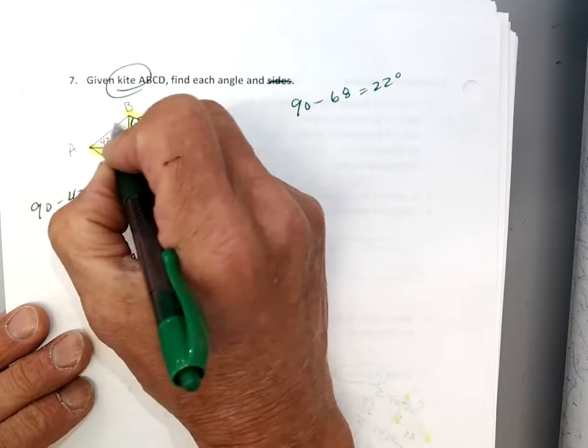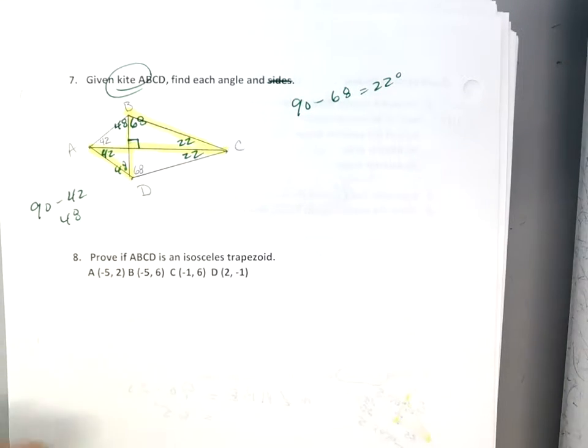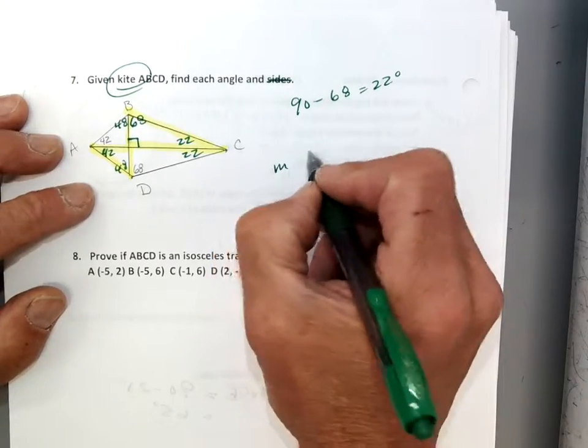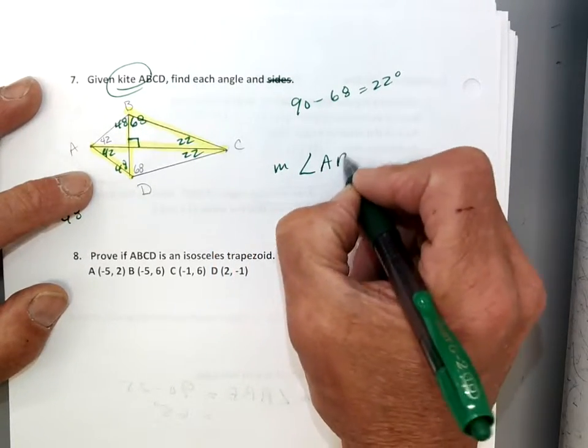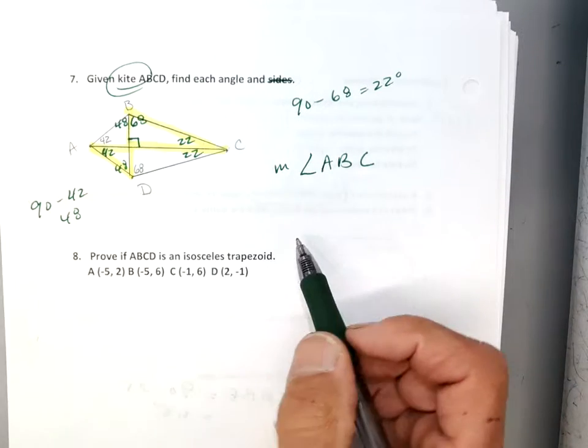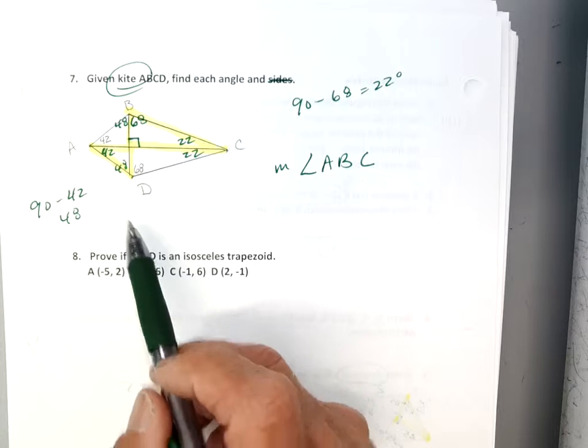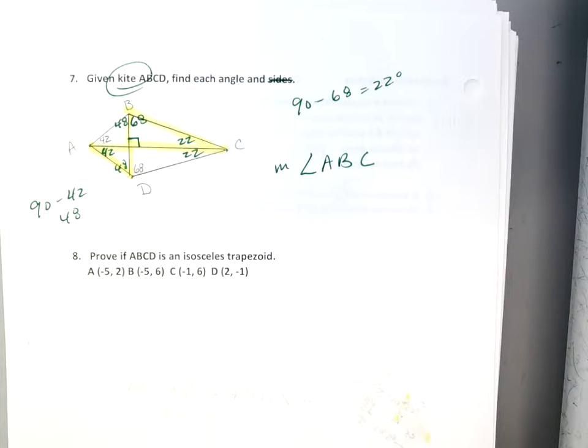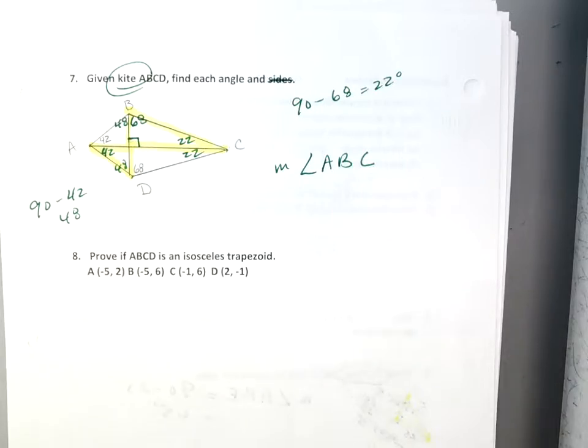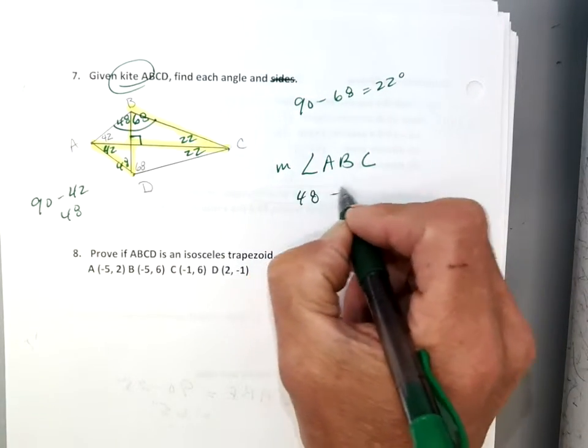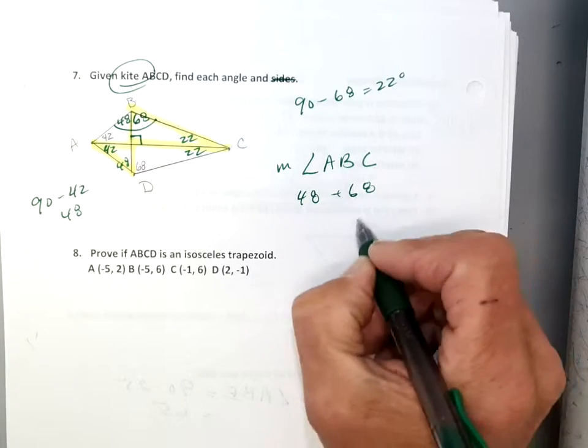And I'm going to go 90 minus 42, which is 48. So I've got 48 and 48. Now, before I move on, I'm going to ask this question. I'm going to say, what is the measure of angle ABC? ABC is not 68. It's 68 plus 48. Yeah, ABC is really. So my ABC is 68 plus 48. 116. Yeah, it's going to be that full angle there. It's going to be my 48 plus my 68. Is it 116? It's 116.